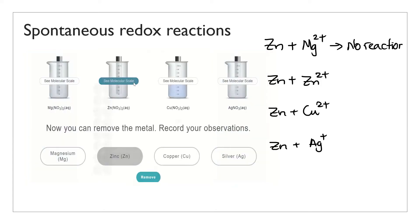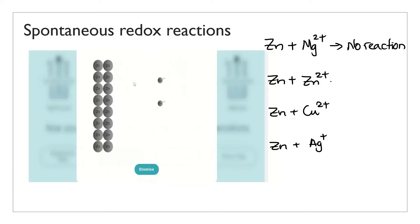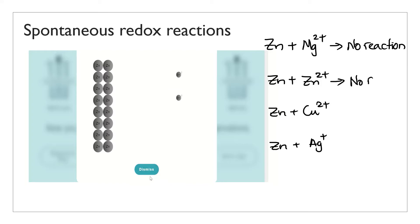On to the second combination: the zinc ions don't react with zinc either. Once again they come into contact with each other and just sort of bounce off. It will be quite unlikely for zinc to react with zinc metal anyway.